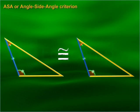ASA, or Angle-Side-Angle criterion: if two angles and the included side of one triangle are equal to the two corresponding angles and the included side of another triangle, then the triangles are congruent.